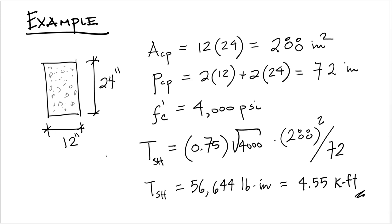Let's say that f'c is 4000 psi. Then threshold torsion is 0.75, that's φ times square root of f'c times ACP squared divided by PCP. That comes out to 56,644 pound-inches, which is 4.55 kip-feet. So basically this means that if you were using this member, let's say on a cantilever beam like this, supported at this end here.